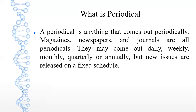For example, The Economist is a weekly-based magazine with issues released on a fixed schedule. Some journals such as Foreign Affairs and Foreign Policy are published bi-annually or bimonthly, meaning a journal is released every two months by various organizations.